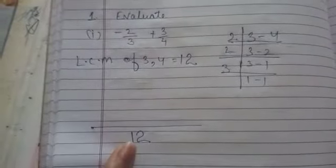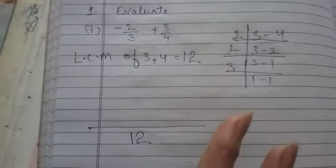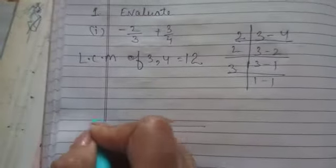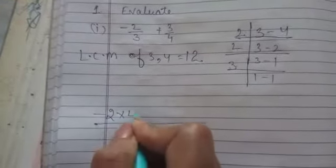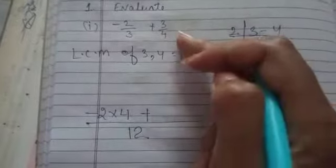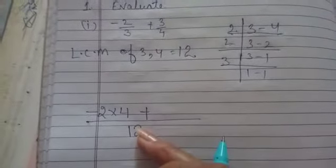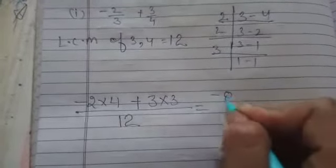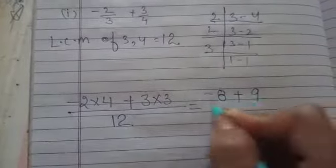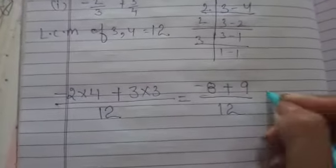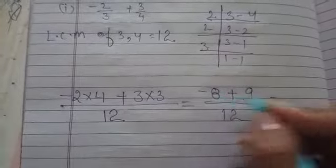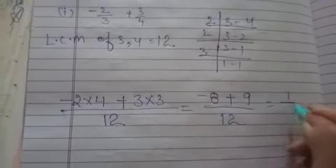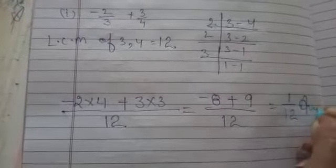The denominator of the fraction divided. 3 will divide the 12, you will get 4. That whatever answer you will get after division, that will multiply with the numerator like this. Plus, again 4 will divide the 12, you will get 3, and 3 will multiply with 3. 4 times 2 is 8. 3 times 3 is 9. 9 is the bigger number. So, it will be 1 over 12 your answer.